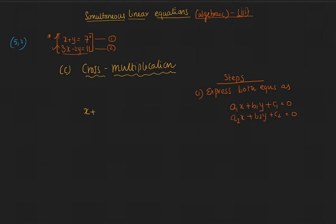Let's do x plus y minus 7 equal to 0. That's the first one. The second equation, we can write it as 3x minus 2y minus 11 equal to 0. So we are done with the first step.